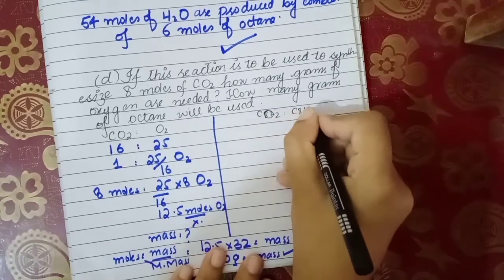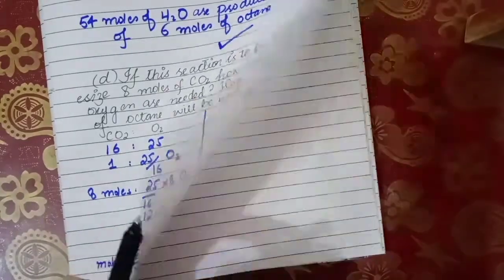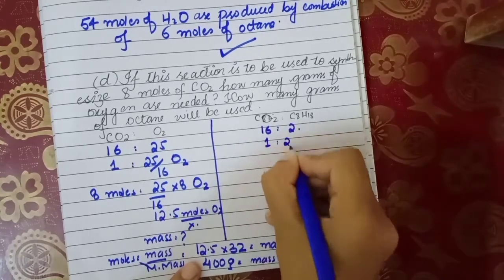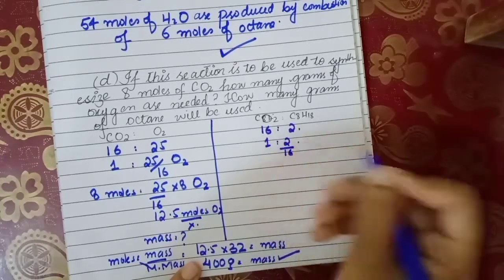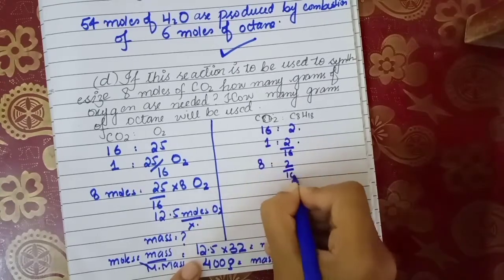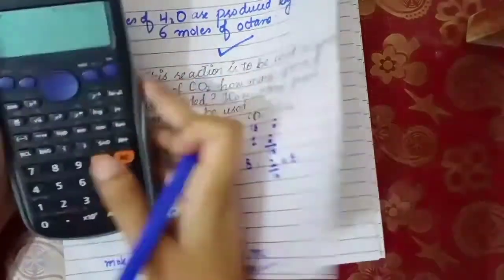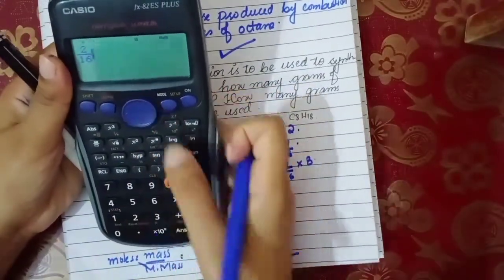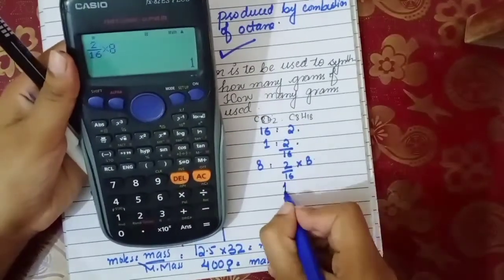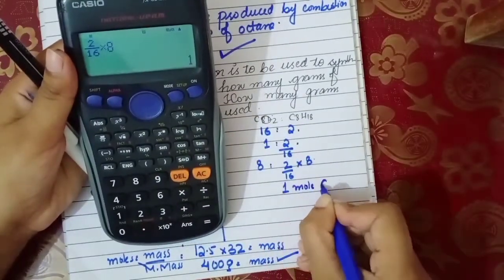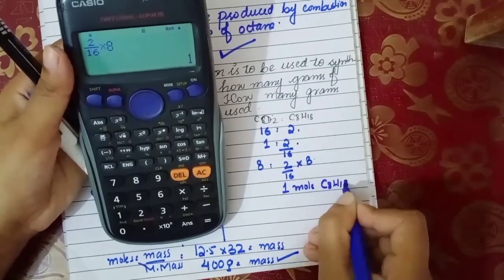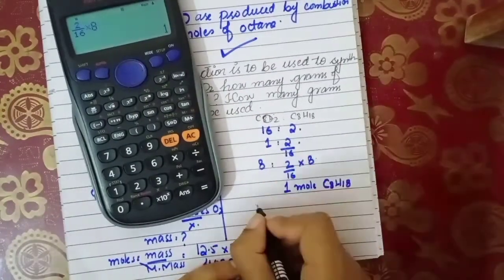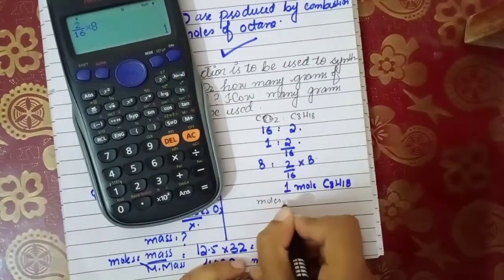Now finding grams of octane: CO₂ is known, written on the left side. According to the equation the ratio is 16:2, so 1 mole of CO₂ gives 2/16 moles of octane. For 8 moles of CO₂, that is 2/16 multiplied by 8, which equals 1 mole of octane. So synthesizing 8 moles of CO₂ requires 1 mole of octane.